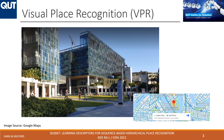Visual place recognition is one of the ways of performing visual localization. By looking at an image from a particular place which one has already seen, one can recognize that place. For example, this image captured from Queensland University of Technology — I can immediately look at it and tell where I am. This is one of the ways of telling your location with respect to a given map.